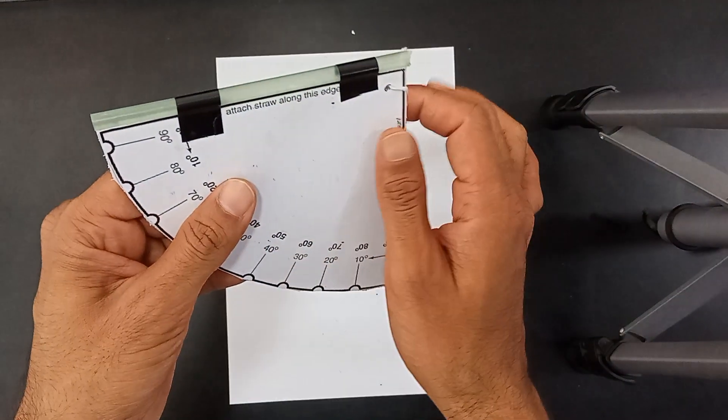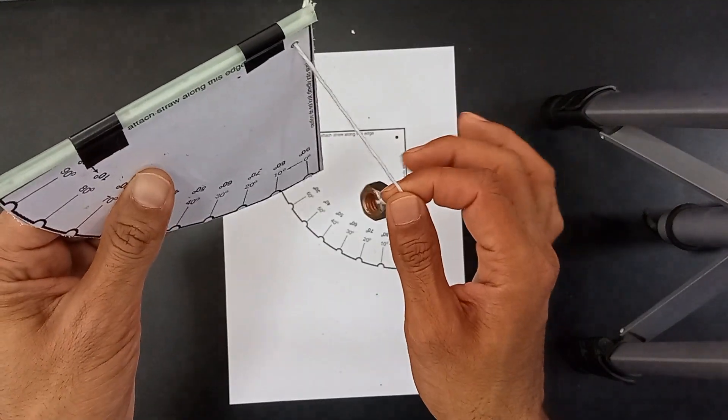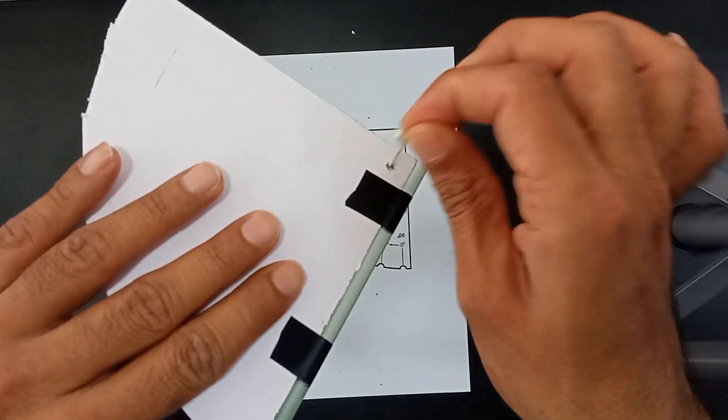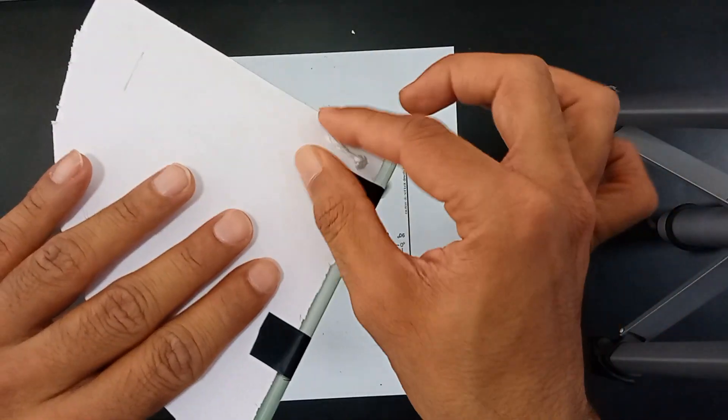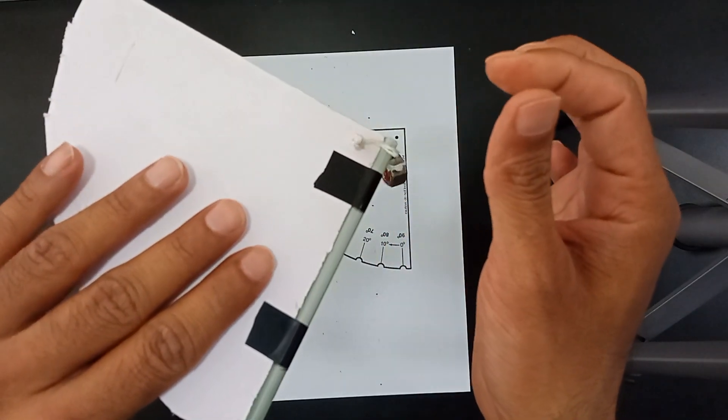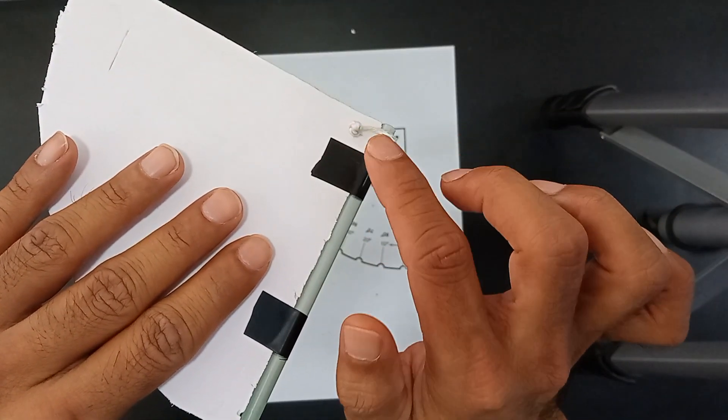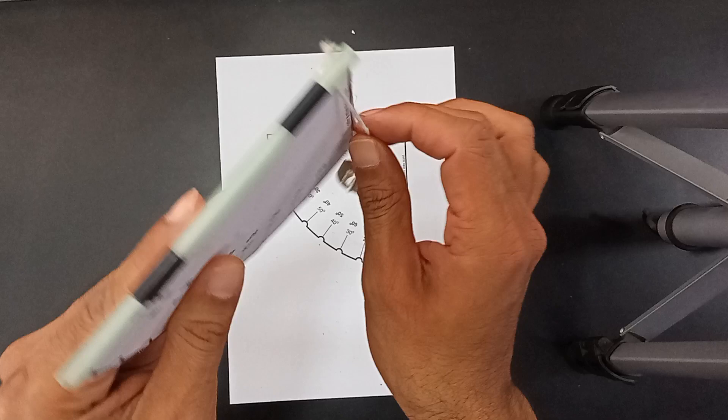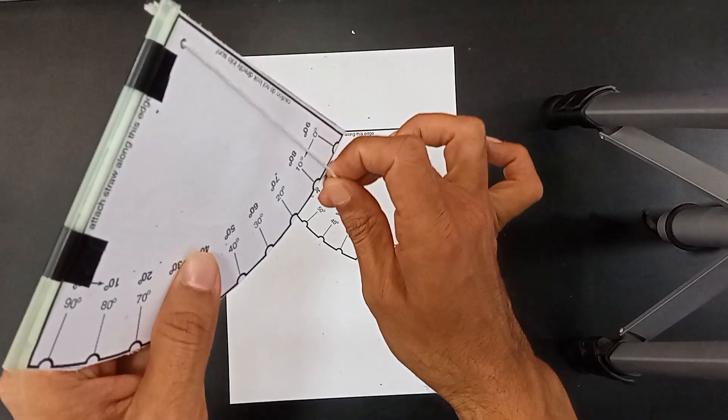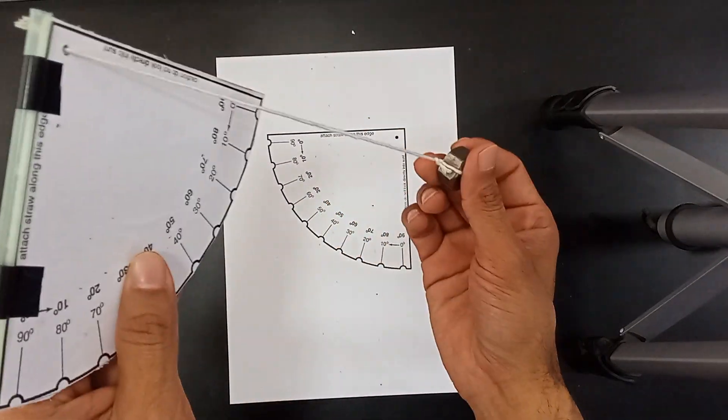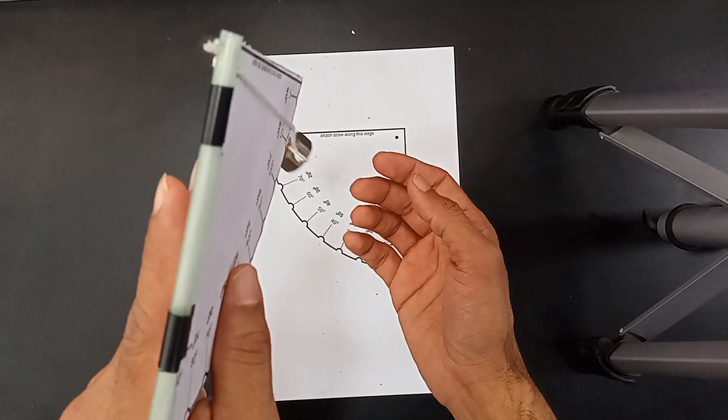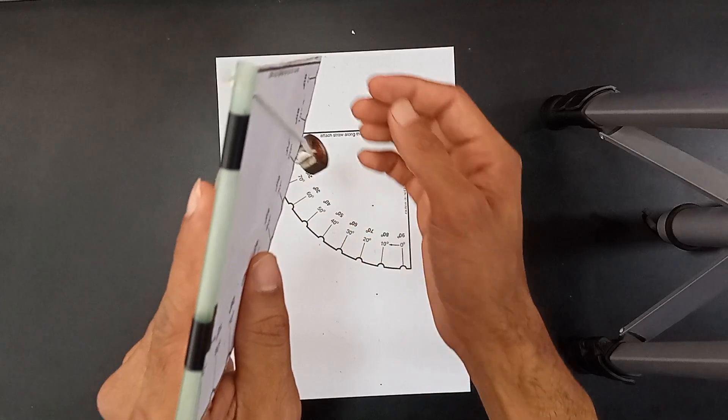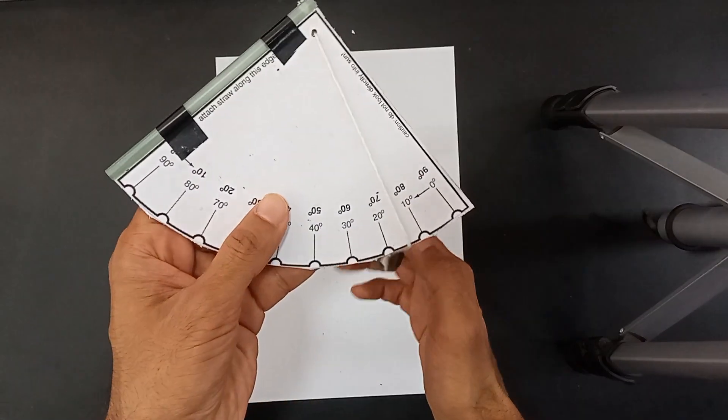Then I have taken a thread and tied a few knots over here at one end so that it does not pass through. See, it stays over here. And on the other side I have placed a nut at the end of the thread so that it hangs properly like this. It's very simple to make, all you have to do is follow the instructions.